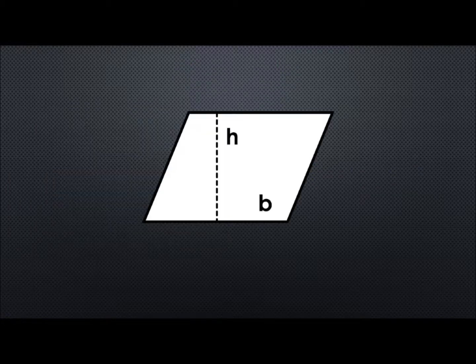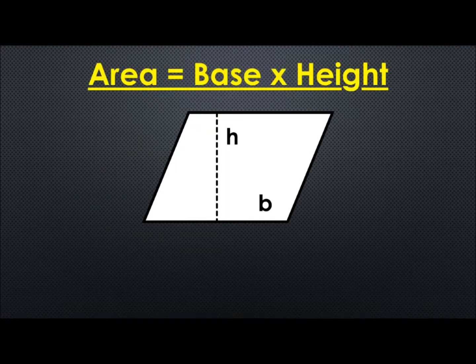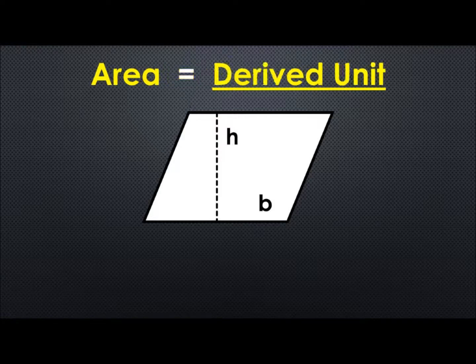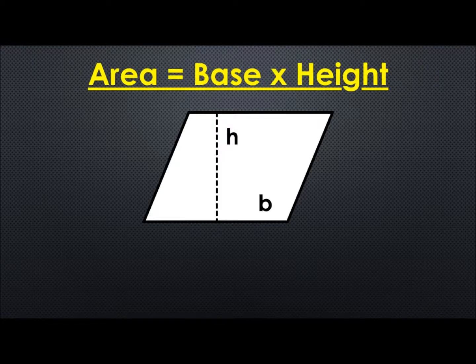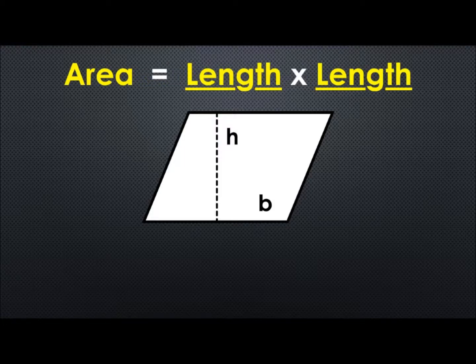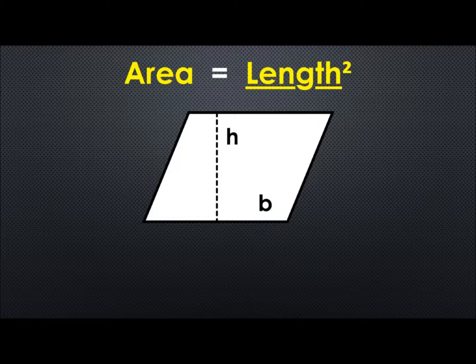Now we're trying to find the area of a rhombus which is the base times the height. Now at this point we're going to explain derived units. Derived units are where we have two or more basic units that come together to form another unit of measurement. The base times the height can also be looked at as one length times another length. And when we put those two together we have a length squared.